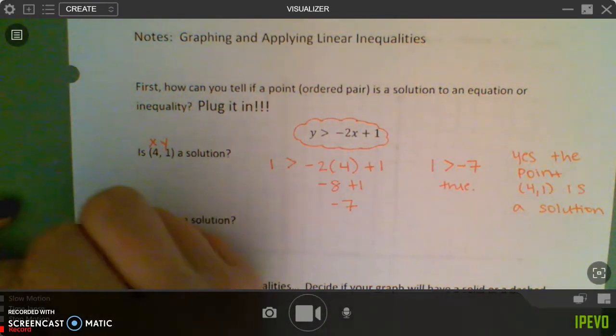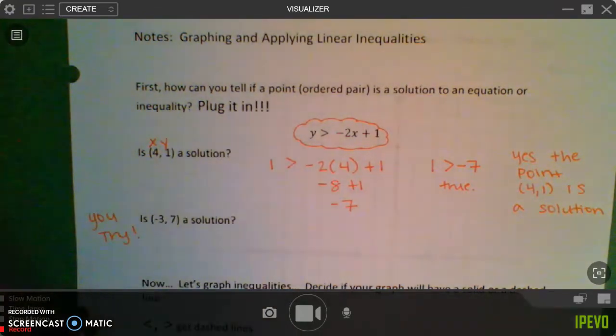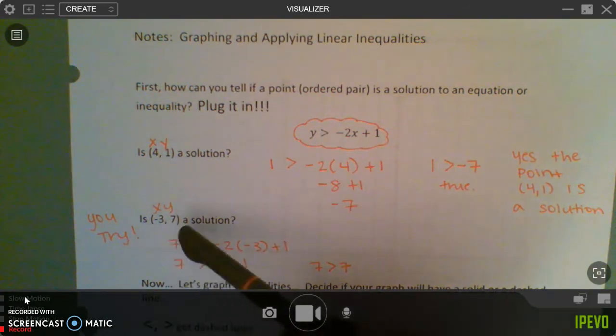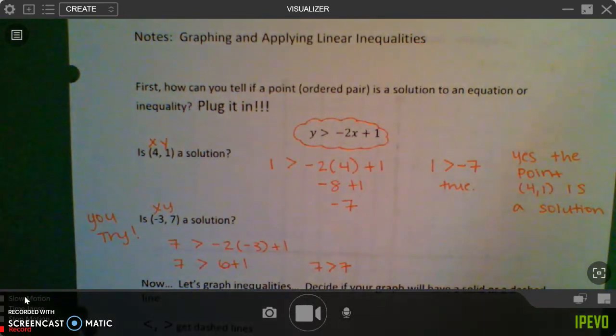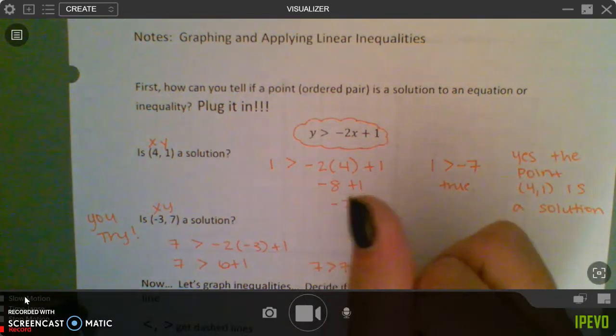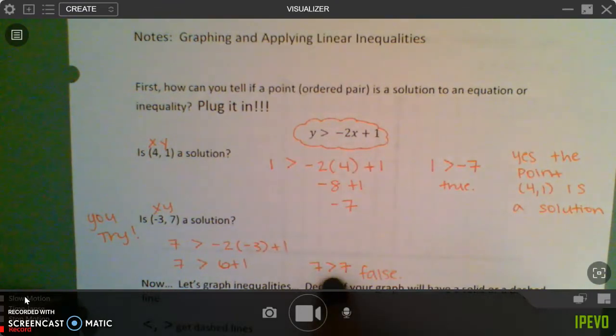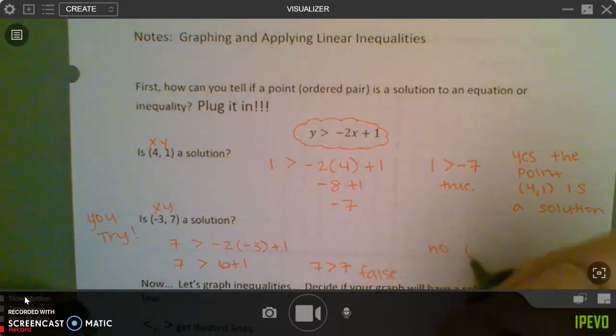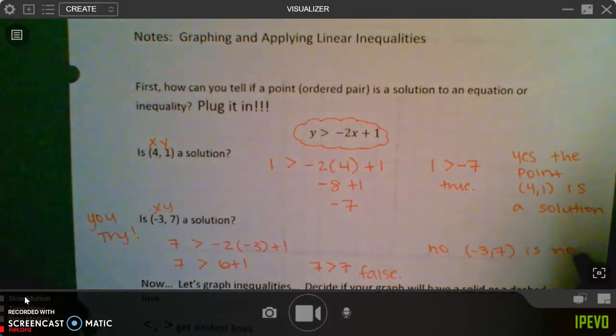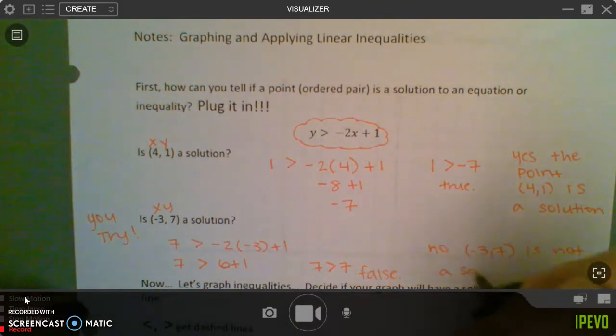You guys try the second one. Pause this video and try the second one. So you should have paused the video and tried to see if this one was a solution. This point, when you plug in negative 3, 7 into the function, you get 7 is greater than 7. 7 is greater than 7, that's false. It would need the little line underneath to mean equal to in order for it to be true. So because this is false, no, negative 3, 7 is not a solution.